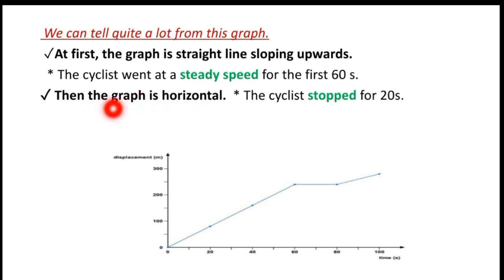Then the graph is horizontal. The cyclist stopped for 20 seconds. The displacement doesn't change during this time, showing the cyclist is stationary. Then the slope is upward again, showing the cyclist is moving again.